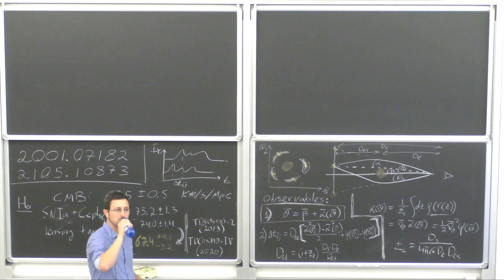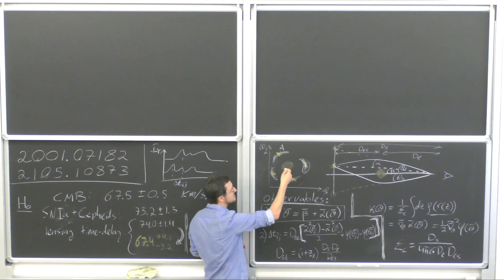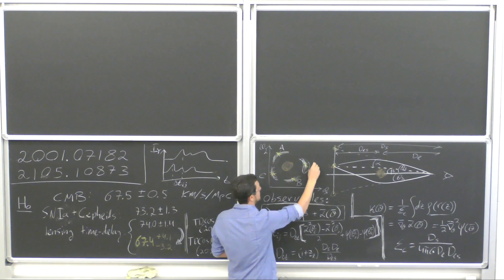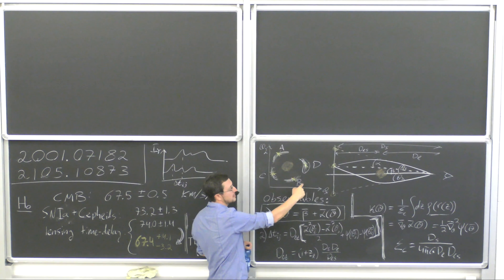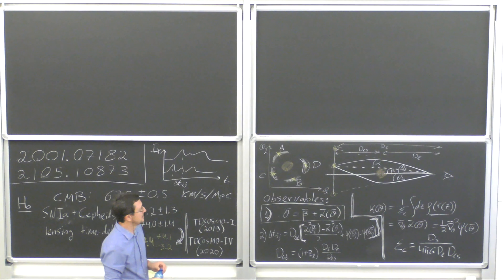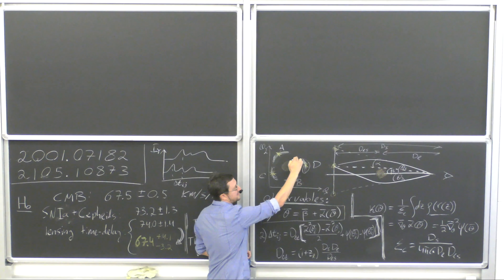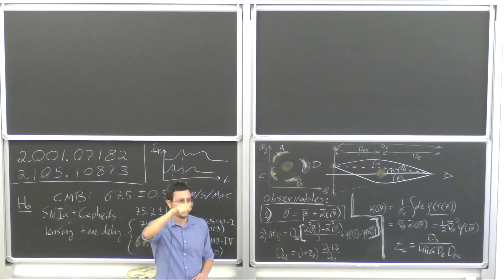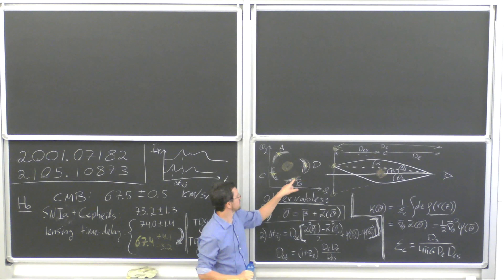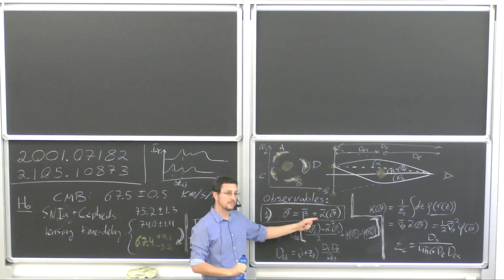The time delay between image i and image j — in these systems typically four images labeled A, B, C, D. The time delay is acquired from two things: first, the geometrical difference in the actual traverse distance along the geodesic between different geodesics, and second, just gravitational time delay. It's a factor of two if you add them up. We really care about the specific positions of the quasar to get that part of the measurement, but we have a lot of information to get the first part from the imaging.